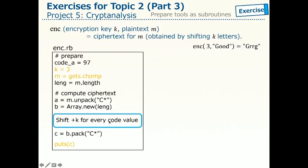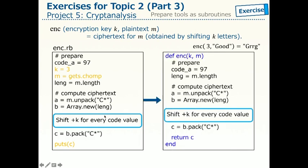Since we have already created the program for encryption, the subroutine implementation is not so difficult. You can simply convert it in this way. Let me explain first the whole structure. In Ruby, the definition of the subroutine always starts with def, which is followed by the subroutine name and the tuple of arguments. In our case, enc is the name and its arguments are K and M. The definition of the subroutine is given between the def statement and the corresponding end statement. So the whole of this box is the definition of subroutine enc.